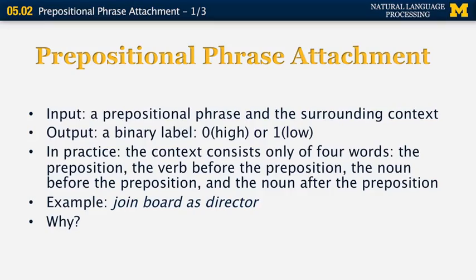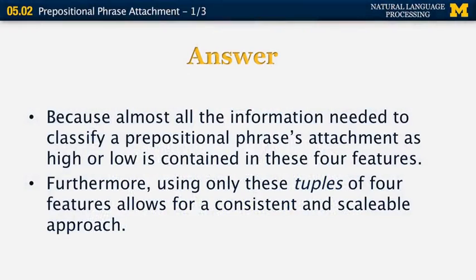Why do we only keep those four words and ignore everything else? There are two reasons. The first is that we don't really need the rest of the context — almost all the information needed to classify a prepositional phrase as high or low attachment is contained in those four features. The second reason is that using consistent four-feature tuples allows for a more consistent machine learning approach.